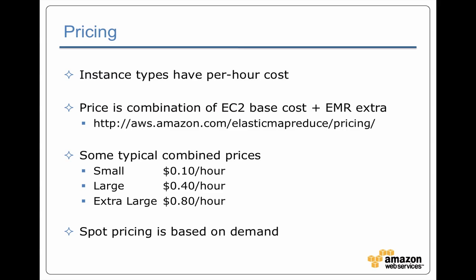Every instance has a price measured in terms of hourly usage. It's a step function — as soon as you start using an instance for part of an hour, you're paying for that full hour. When you get into the next hour, you're immediately charged for that next hour. The price is a combination of a base price, which is the same as your EC2 cost, plus an extra price that Amazon adds because you're using Elastic MapReduce.